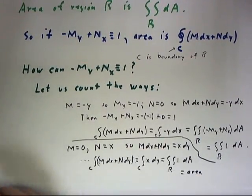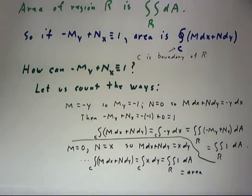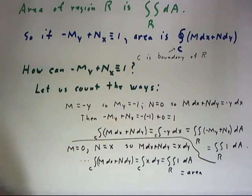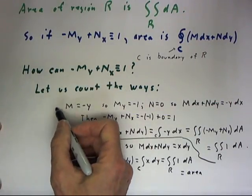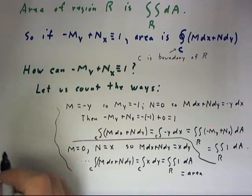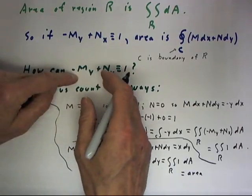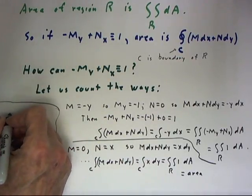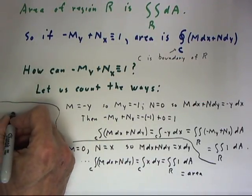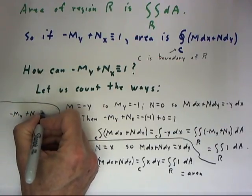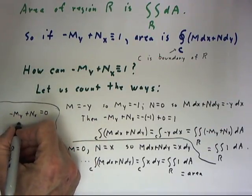I said there were infinitely many possibilities for getting -M_y + N_x equal to 1. Let me just state, in case you're really interested in this, and this might possibly be useful, that -M_y + N_x equals 1 for example...